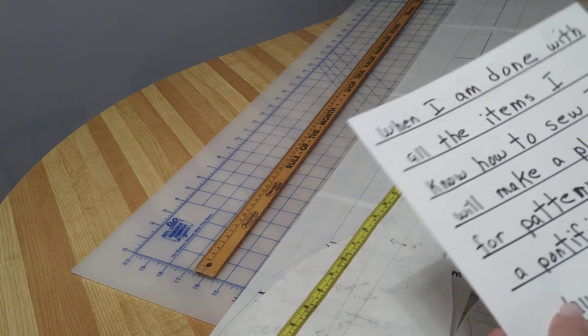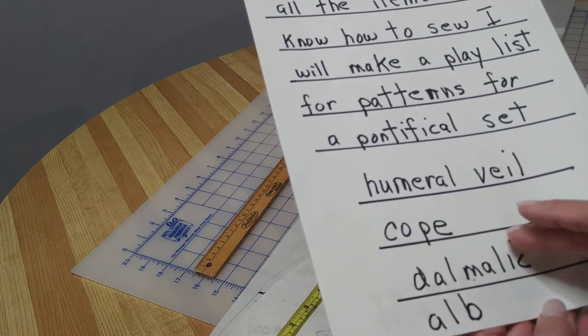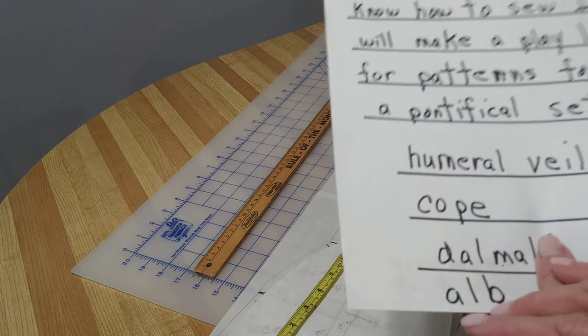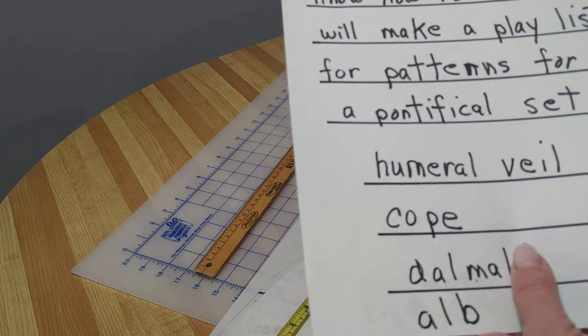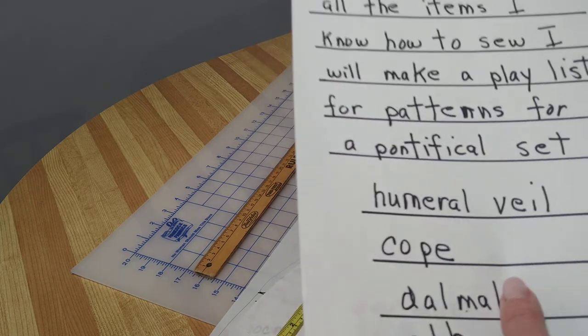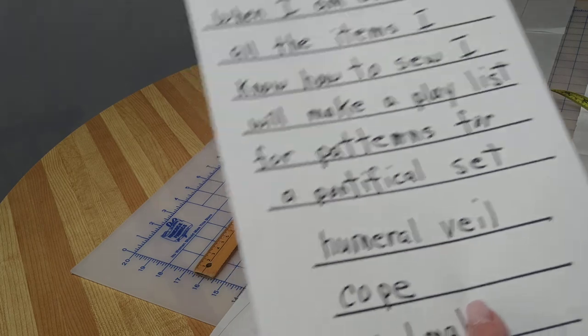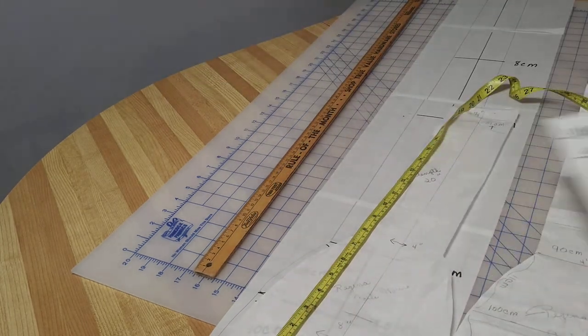One on the humeral veil, one on the cope, one on a dalmatic, and even though the alb is not out of liturgical fabric, it's out of white linen, I'll include that also in my playlist when I'm all done. I don't know how long that will take, so be patient. Thank you and good luck.